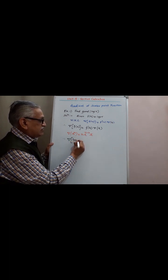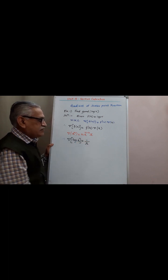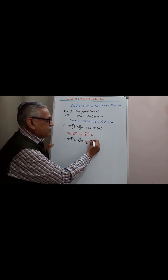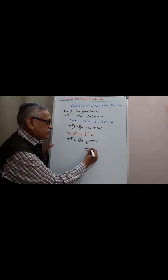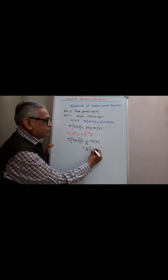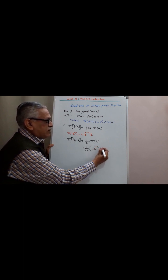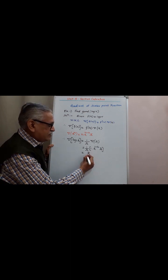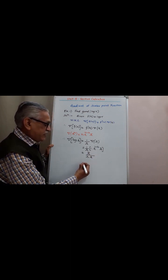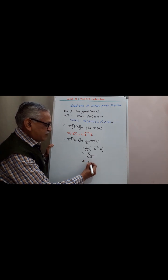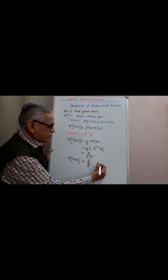For log(r), this equals (1/r) · ∇r = (1/r) · r^(1-2) · r̄ = r̄ divided by r · r, giving the final answer as r̄ upon r squared.